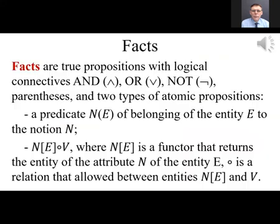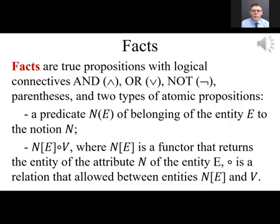Facts are used to represent knowledge, and inference rules are used for reasoning, allowing inferences based on existing facts and obtaining new facts. Facts are true propositions with logical connectives AND, OR, NOT, parentheses, and two types of atomic propositions: one, a predicate N(E) — belonging of entity E to notion N; and two, N(E) op V, where N(E) is a functor returning the entity of attribute N of entity E, and op is a relation allowed between entities. A universal relation is equality, defined recursively: two entities are equal if and only if the values of their private attributes are equal.